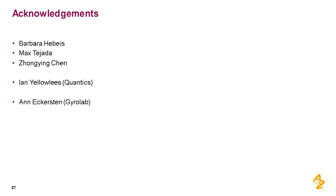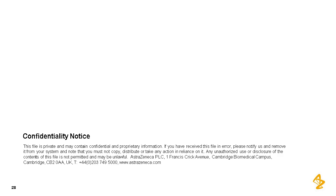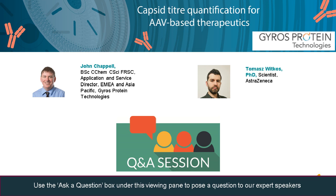Thank you very much, Thomas, for your presentation. I'd like to start with some questions — we do have a number of questions in. The first question is: what were your particular reasons for developing the assays using the Gyrolab platform rather than using traditional ELISA? The first reason is that there are not a lot of available commercial kits for accurate capsid quantifications, and after evaluating commercial ELISA kits on the market, we decided they do not provide the dynamic range that would be needed.